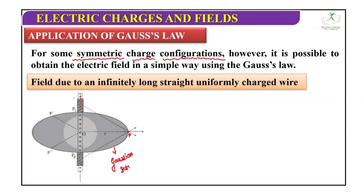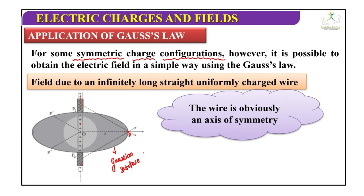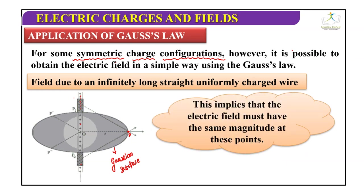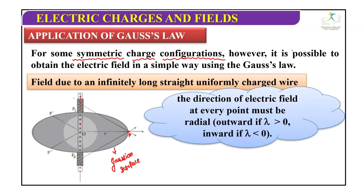The wire is the axis of symmetry. The points P, P prime, and P double prime are completely equivalent with respect to the charge of the wire. This implies the electric field must have the same magnitude at these points. The direction of the electric field at every point must be radially outward if lambda is greater than 0 (positive charge) and inward if lambda is less than 0 (negative charge).